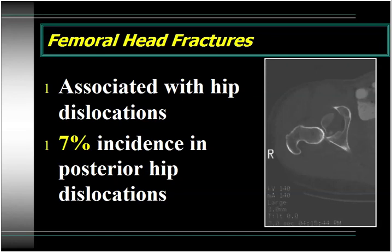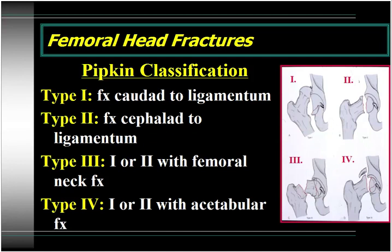Femoral head fractures are always associated with hip dislocations. If you look at all posterior hip dislocations, 7% of them will have a femoral head fracture. The Pipkin classification is important to remember because it has therapeutic implications. Type 1 fractures are those in which the fracture is below the ligamentum teres — a small inferior head fragment not involving the major weight-bearing portion. A type 2 fracture is a much larger fracture extending above the ligamentum teres. A type 3 is either a 1 or 2 with an associated femoral neck fracture — a very serious fracture. A type 4 is a quite common injury with a 1 or 2 combined with an acetabular fracture.